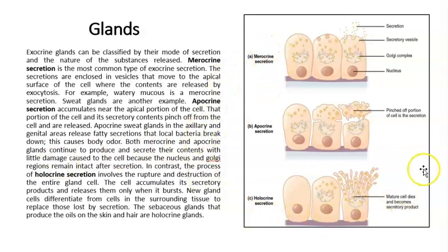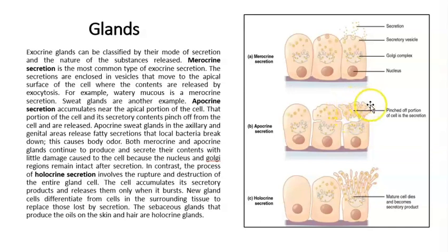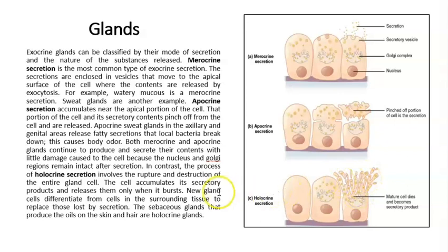In merocrine glands, the glands produce the contents and they release them by exocytosis — they just open and release the contents. In the case of apocrine glands, they produce the substance, but when they release it, parts of the cell membrane surround the contents and are released together with the contents. In the case of holocrine glands, the cell produces so much content that the cell actually explodes, and the contents are released with pieces of the exploded cell.